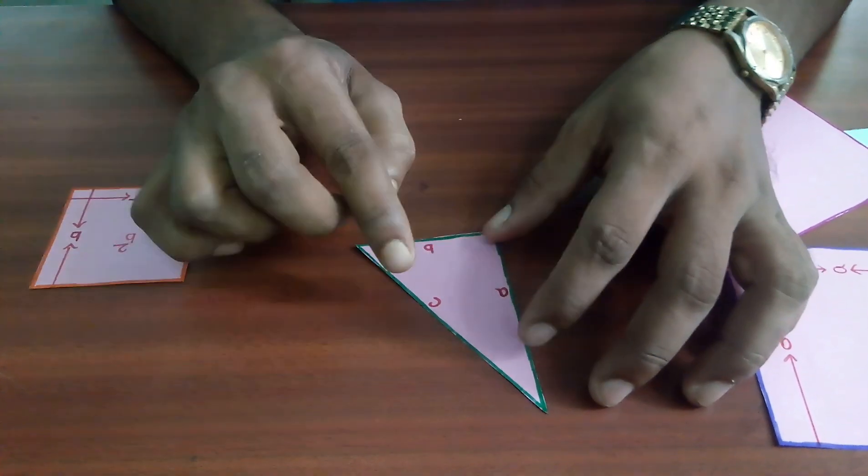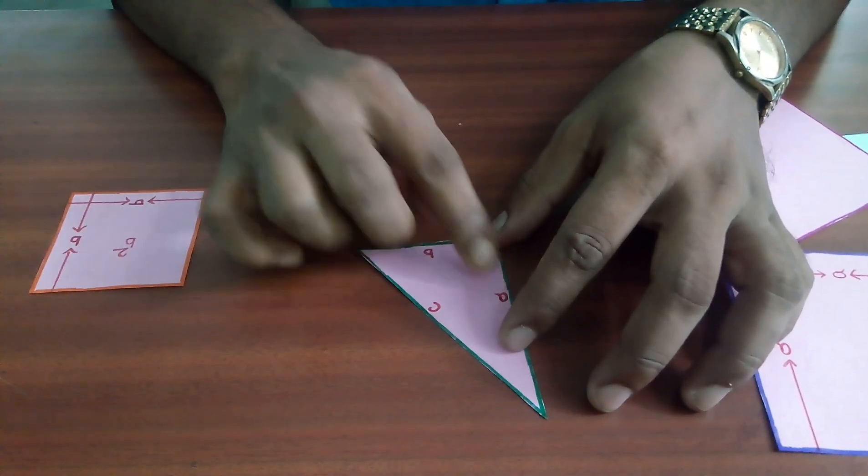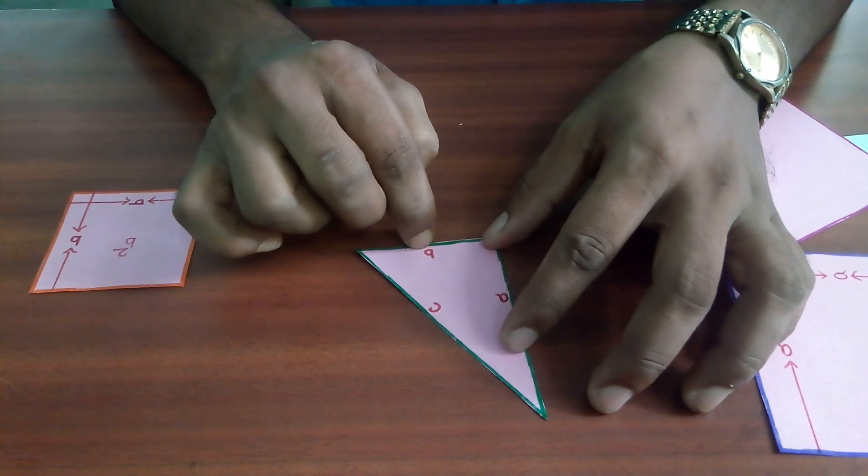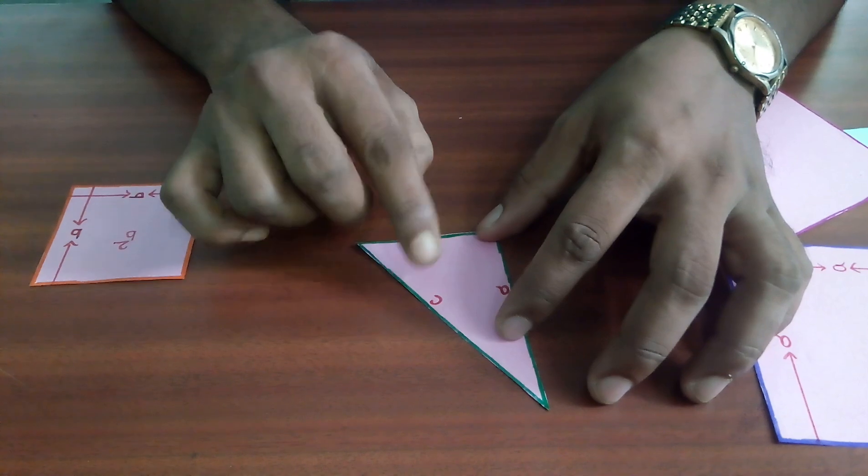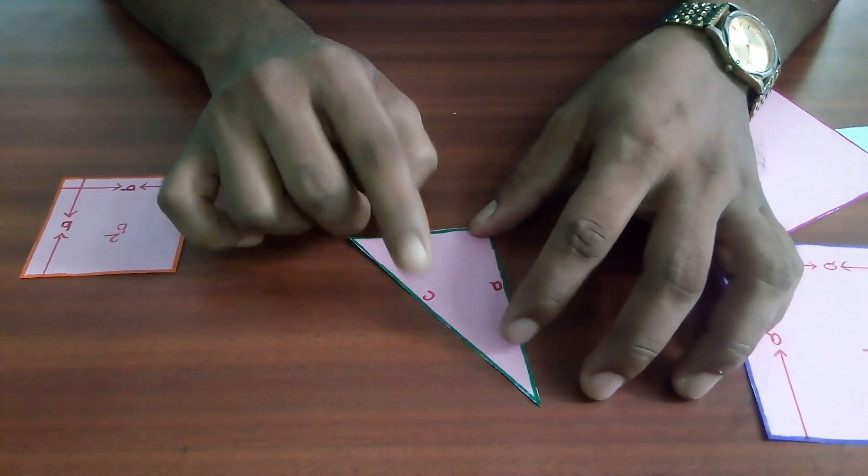Hence, we can say the sum of the square of two sides containing the right angles of a triangle is equal to the square of the hypotenuse which verified the Pythagoras theorem. Thank you.